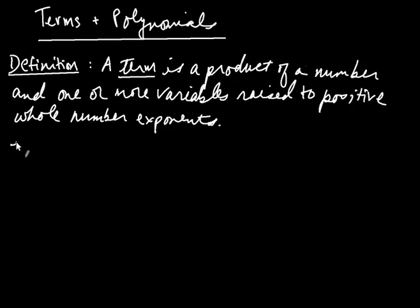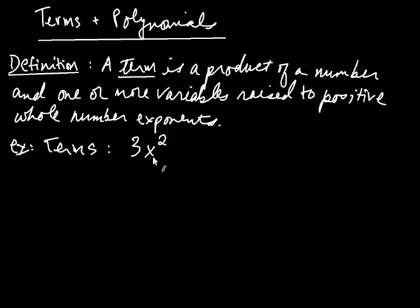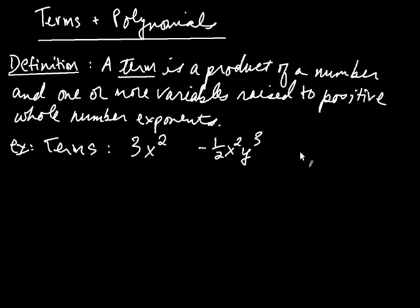Looking at some examples of terms: 3x squared is a term — it's a number 3 multiplied by a variable raised to a positive whole number exponent. Likewise, negative one half x squared y cubed is a term as well. And so would y squared. What's important is that the exponents are positive whole numbers.